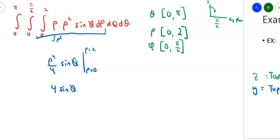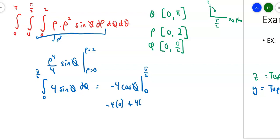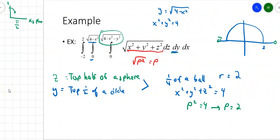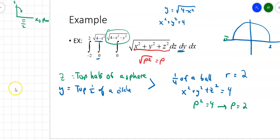Now integrating 4 sine phi with respect to phi from 0 to pi over 2: the antiderivative of sine is negative cosine, so we get negative 4 cosine phi evaluated at pi over 2 and 0. Negative 4 times cosine of pi over 2 is 0, minus negative 4 times cosine of 0 equals 1, giving just 4. Then integrating 4 d theta from 0 to pi gives 4 pi. Even though spherical coordinates can be a little messy, integrating that function with respect to x, y, and z would be even messier — in this case, spherical coordinates bail us out.